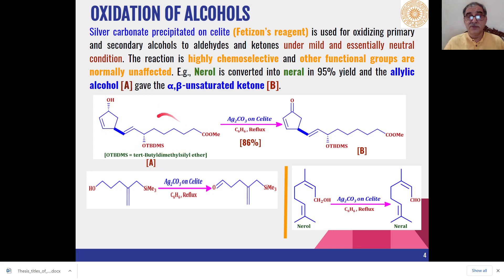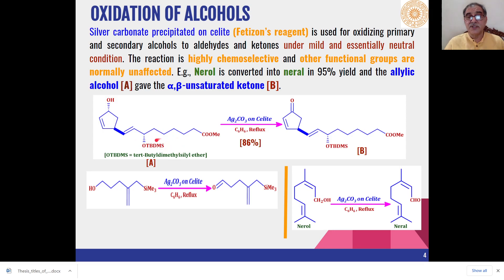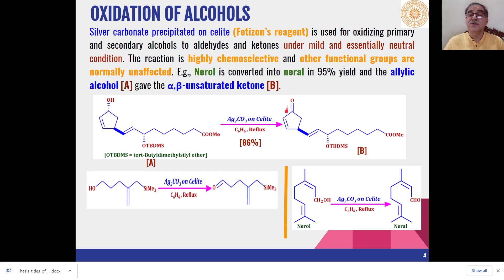For example, in this molecule there is a secondary alcohol which is allylic to a carbon-carbon double bond. In addition, there is an isolated carbon-carbon double bond, a tert-butyldimethylsilyl ether moiety, and an ester group. You can see that the ether moiety, carbon-carbon double bond, and ester moiety are not affected by the oxidizing agent. Only the secondary hydroxyl group — the secondary alcohol — is oxidized to the ketone group in 86% yield.